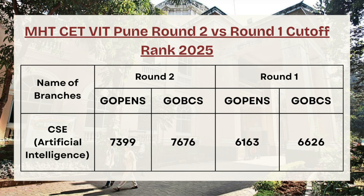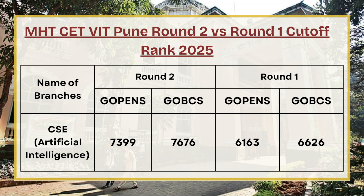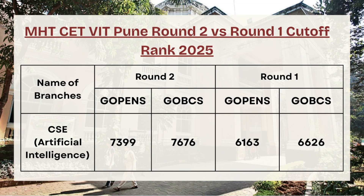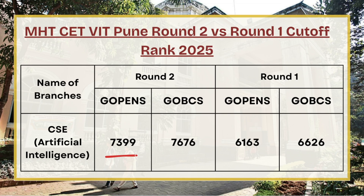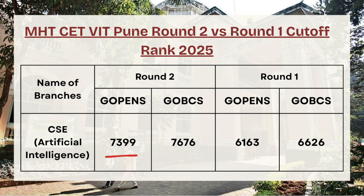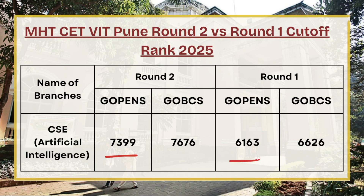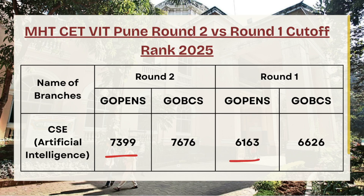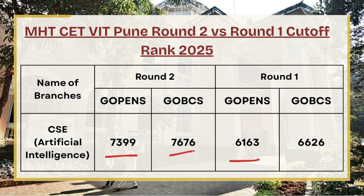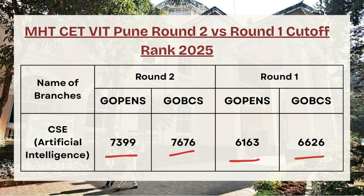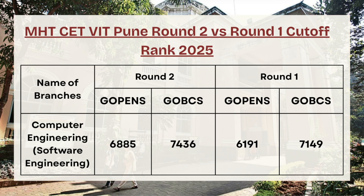Next we have CSE Artificial Intelligence. For G Open category, the cutoff rank was 7,399 for round two whereas in round one it was 6,163. For G OBC category, the cutoff rank was 7,676 in round two whereas in round one it was 6,626.